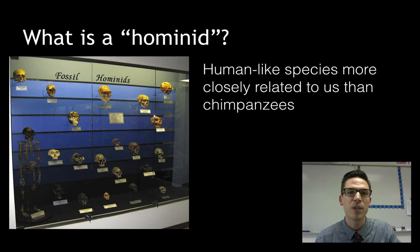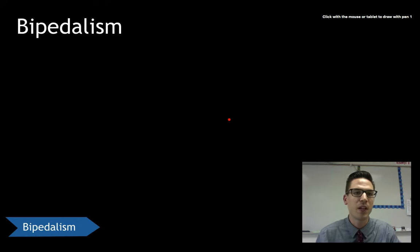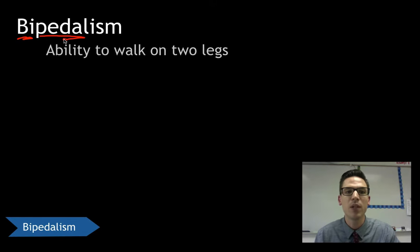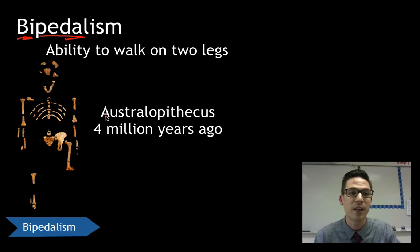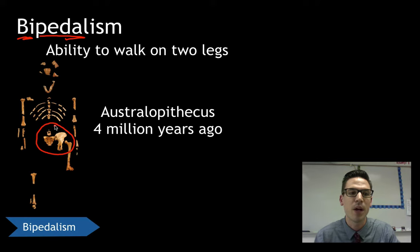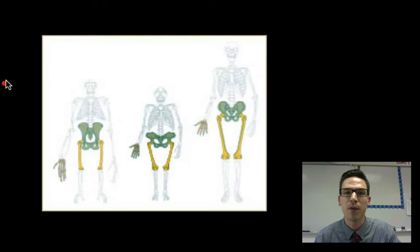Looking at their fossils tells us the basic evolutionary trends we see over the last four million years. One of the first trends is the development of bipedalism. Breaking it down: bi meaning two and pedal meaning feet — the ability to walk on two legs. This was one of the first evolutionary advancements we see with hominids. One of the first hominid groups is Australopithecus, existing about four million years ago. A very famous fossil we found, nicknamed Lucy, showed structural changes that led to bipedalism — including a bowl-shaped pelvis which allows for upright two-legged movement.